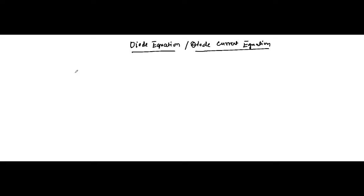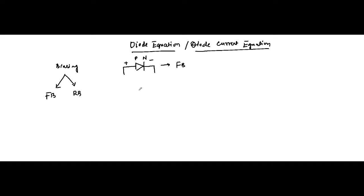We have already discussed the biasing of diodes. We know that p-n junction diodes can be connected in forward biased mode or reverse biased mode. We have discussed their volt-ampere characteristics. When the p-side is connected to positive and n-side to negative, the diode is forward biased. When it is the opposite — p-side to negative and n-side to positive — that is reverse biased.